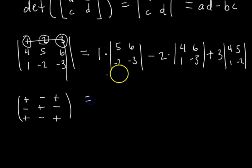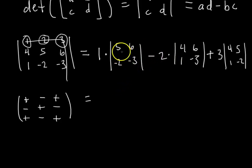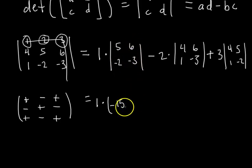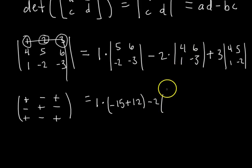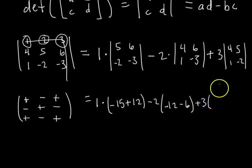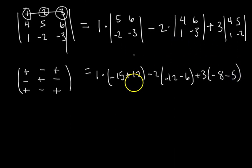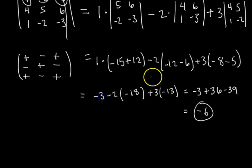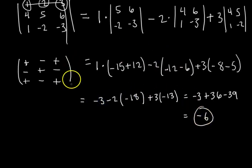Now we simplify. We compute each 2x2 determinant: 1 times (5·(−3) − 6·(−2)) = 1·(−15 + 12) = −3. Then minus 2 times (4·(−3) − 6·1) = minus 2·(−18) = ... and plus 3 times (4·(−2) − 5·1) = 3·(−13). After simplifying all terms, we end up getting negative 6 as our answer for the determinant of this 3x3 matrix.